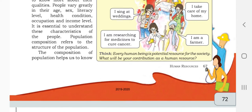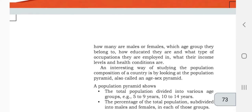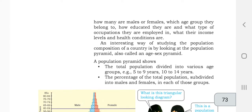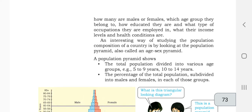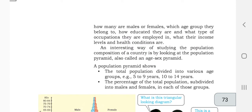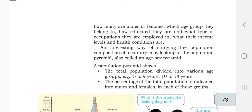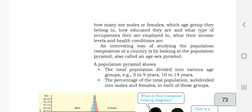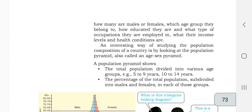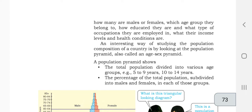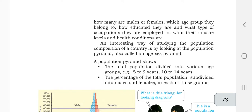Population composition refers to the structure of the population. It helps us know how many are males and females, which age group they belong to, how educated they are, what type of occupation they are employed in, and what their economic levels and health conditions are. These aspects determine how countries rate their populations. If people are employed and economic conditions are good, the country will also grow.